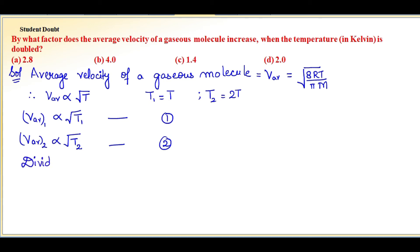v_av2/v_av1 equals √(T₂/T₁). Substituting the temperature values: v_av2/v_av1 = √(2T/T).